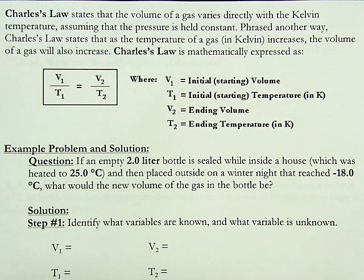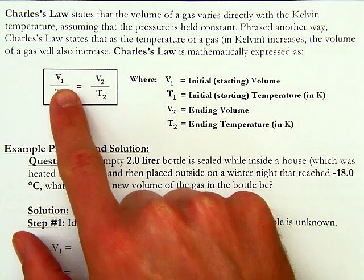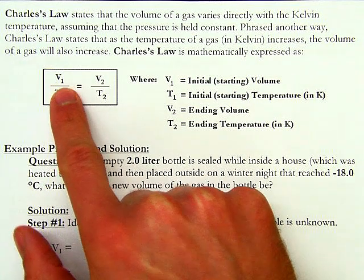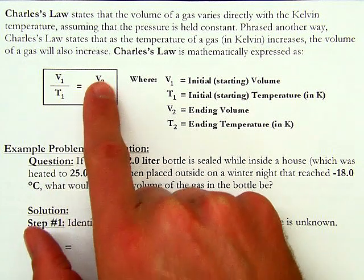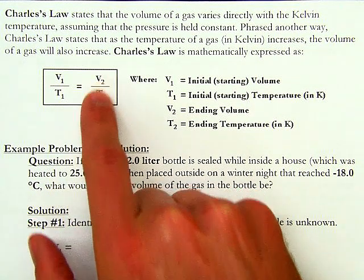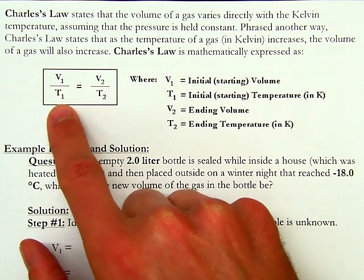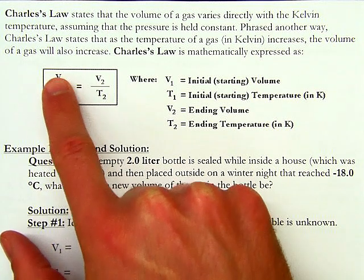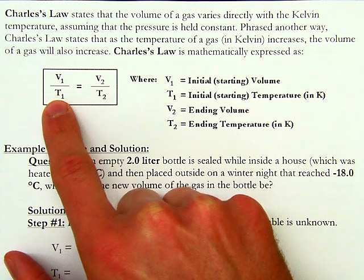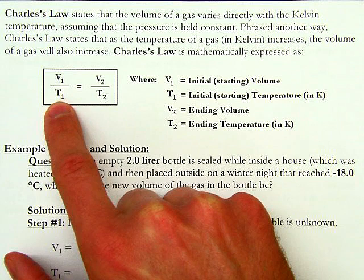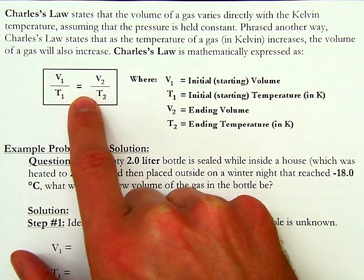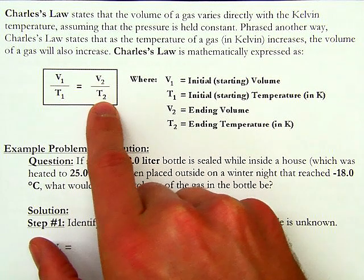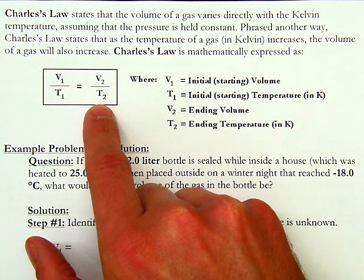Charles' Law written mathematically is V1 over T1 equals V2 over T2, where the ones are your starting conditions. So starting volume over starting temperature equals ending volume over ending temperature. Our temperatures are going to be in Kelvin.